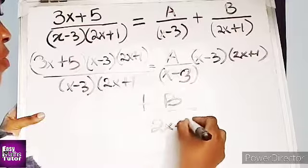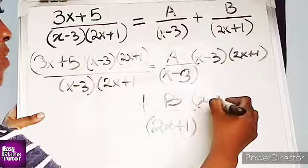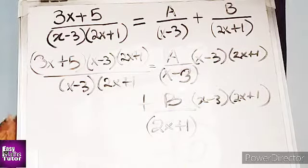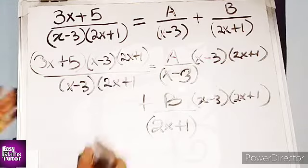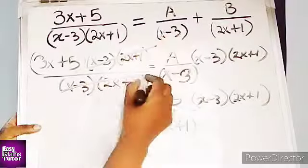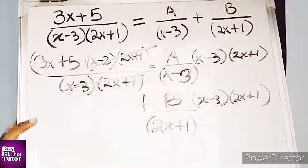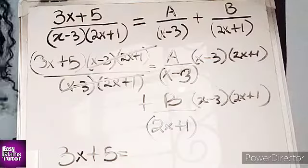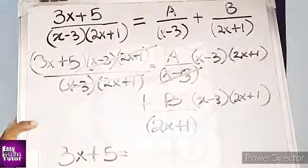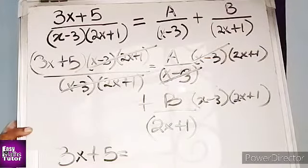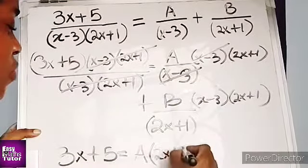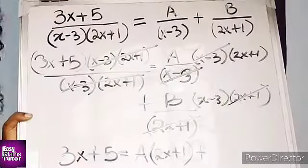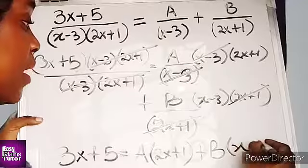Plus b, all over 2x plus 1, times (x minus 3)(2x plus 1). On the left-hand side, the denominator cancels, leaving us with 3x plus 5. On the right-hand side, x minus 3 in the denominator cancels with x minus 3 in the numerator, giving us a(2x plus 1), plus 2x plus 1 cancels on the other term, giving us b(x minus 3).